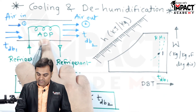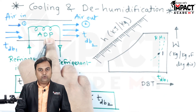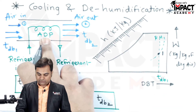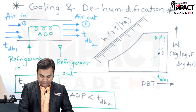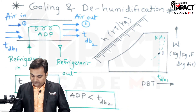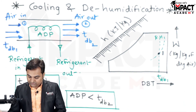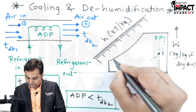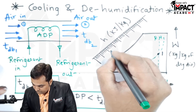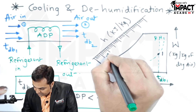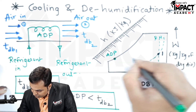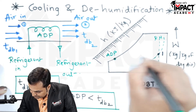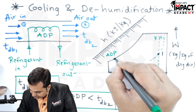Here we have the apparatus dew point temperature. If the temperature of the cooling coil is known, the apparatus dew point temperature should be plotted on the saturation curve. We then join point one to the apparatus dew point temperature.